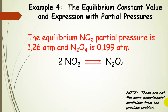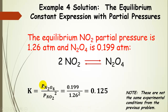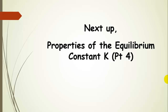Now let's use partial pressures — note these are different experimental conditions. With equilibrium values of 1.26 atmospheres of nitrogen dioxide and 0.199 atmospheres of dinitrogen tetroxide, we write the equilibrium constant expression using partial pressures: dinitrogen tetroxide to the first power divided by nitrogen dioxide to the second power. Plugging in 0.199 and 1.26 gives K = 0.125. K is unitless because we used activities, even for gases. Next we'll talk about the properties of the equilibrium constant.